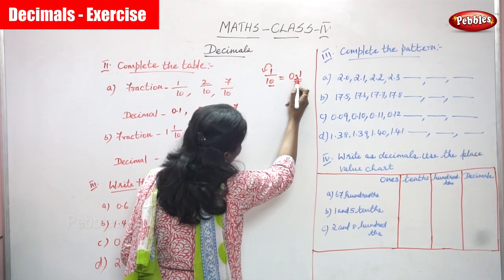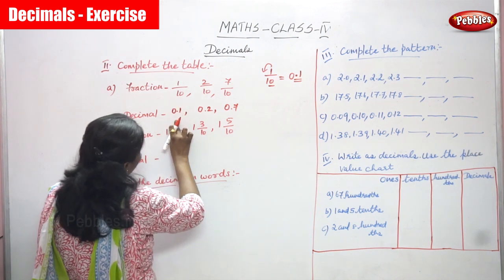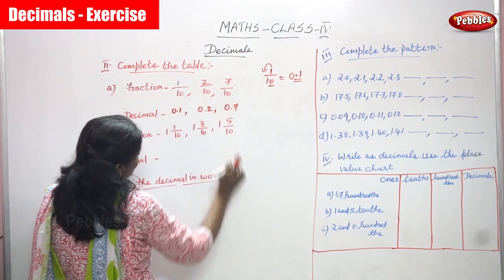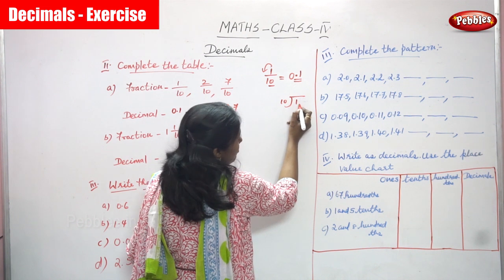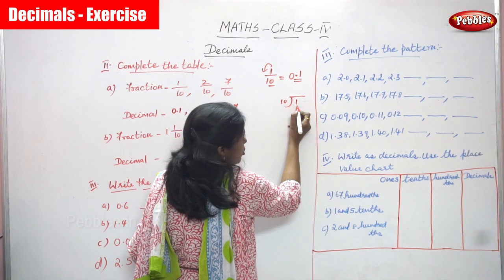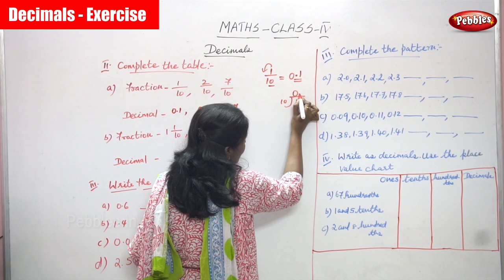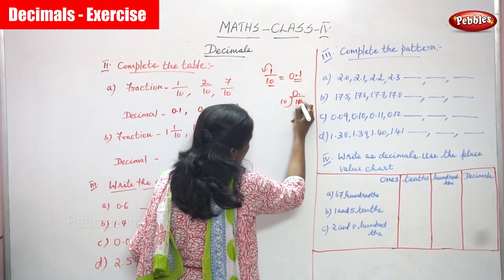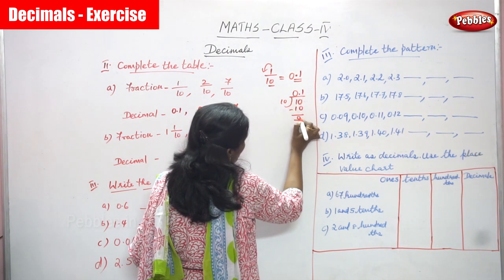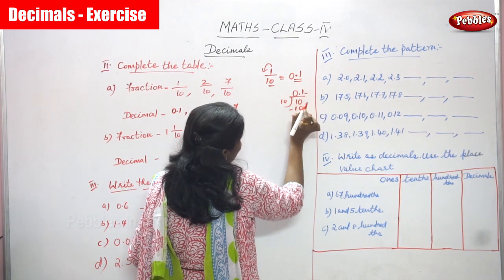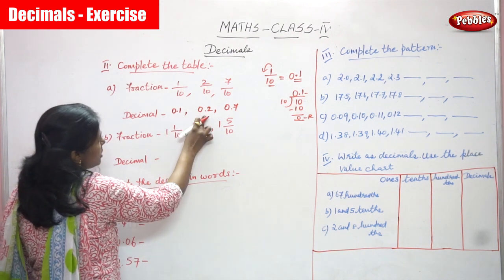A decimal means you have to write zero point — 0 must come. That is why I have written 0.1, because 1 by 10 means 0.1, and 2 by 10 means 0.2, and 7 by 10 means 0.7. Otherwise, we can use the division method: 1 divided by 10 — since 1 is less than 10, you can't divide, so you put a 0, then a point, then add a 0. 10 divided by 10 gives 1, and 10 minus 10 is 0 remainder. Quotient is 1, so the answer is 0.1. This is another method.